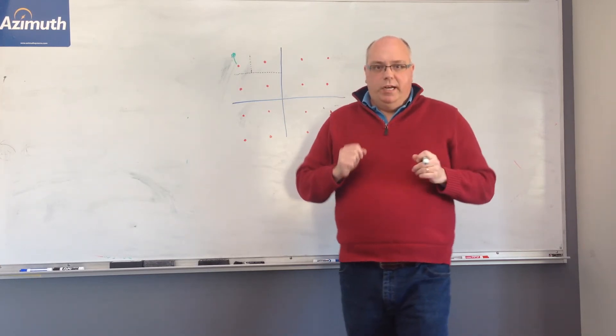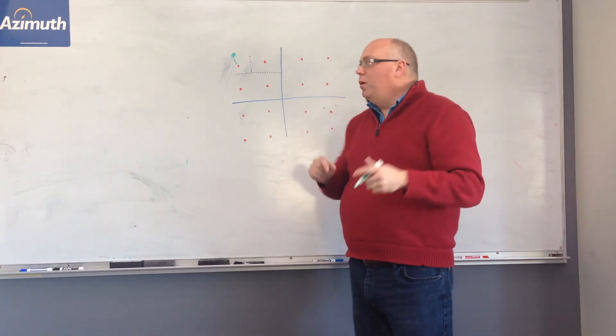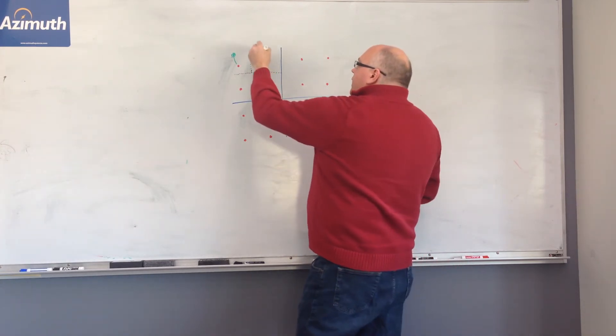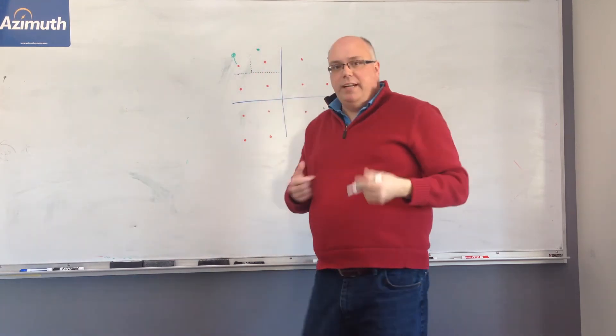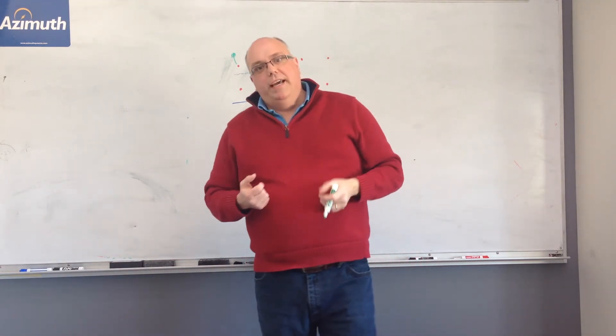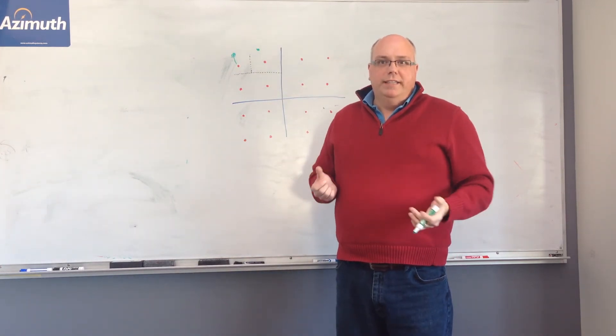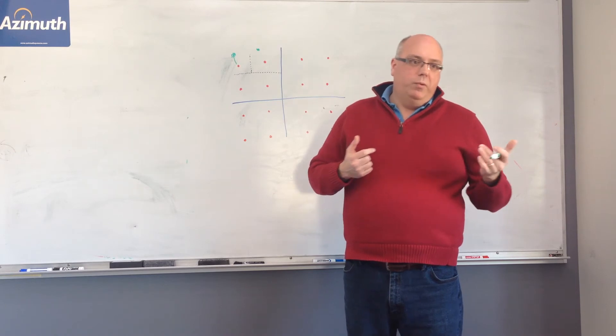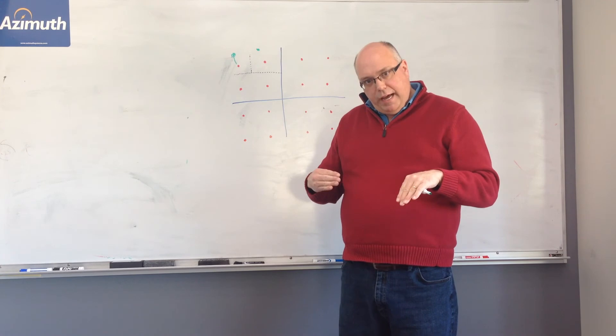The problems become when the error vector gets big enough where we actually swing over and if we're over here, we would decide that we're perhaps at a neighbor constellation point. And as a result, the data that we decode is wrong. And as a result, perhaps we would request a retransmission, and in that case our throughput would go down.